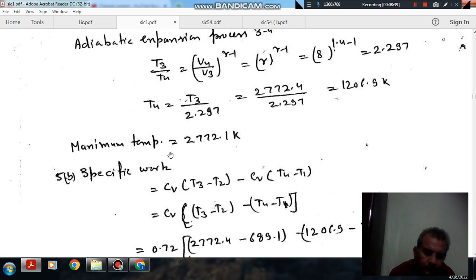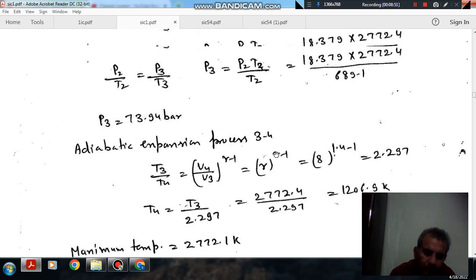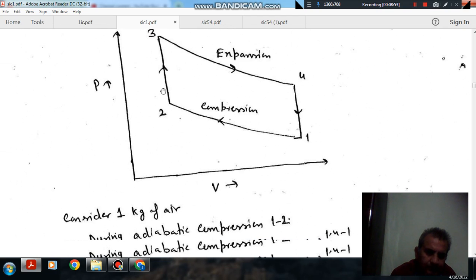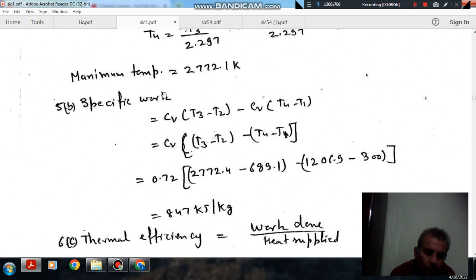So that T4 temperature is 1206 but the maximum temperature is T3. So T3 is 2772.1.